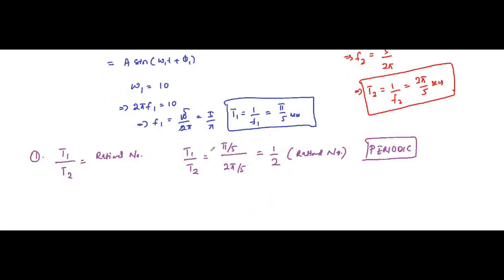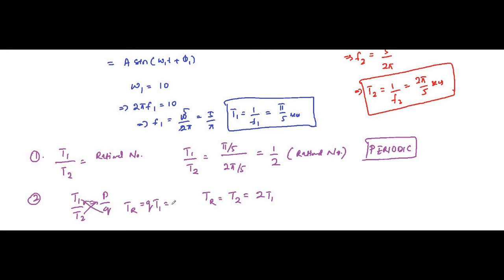The resultant time period is equal to T2, or equivalently 2·T1 through cross multiplication. Since the ratio is expressed as p/q = 1/2, the resultant time period is q·T1 or p·T2. So it is 2·T1, which equals 2π/5 seconds. That is the resultant time period.